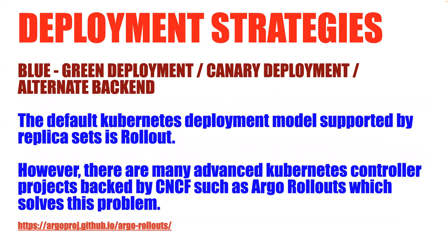Now, deployment strategies. Before Kubernetes, everyone used strategies like blue-green deployment or canary deployment. With blue-green, you have two servers — one with the old version, one with the new — and you point your load balancer between them, with easy rollback if something goes wrong. But in Kubernetes, how do you implement these strategies? Kubernetes predominantly uses the rollout mechanism via deployments and replica sets, which is a step-by-step process and not a sophisticated deployment strategy on its own.